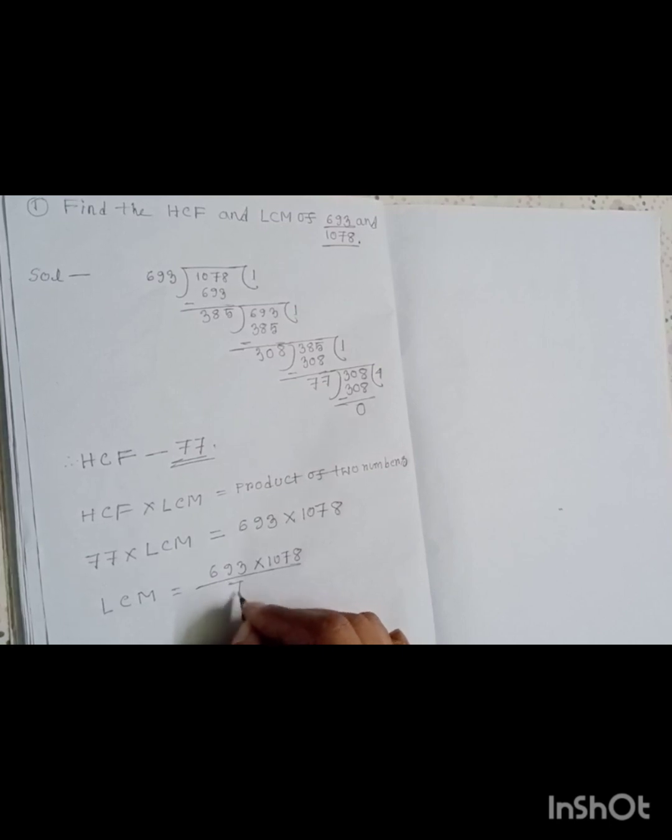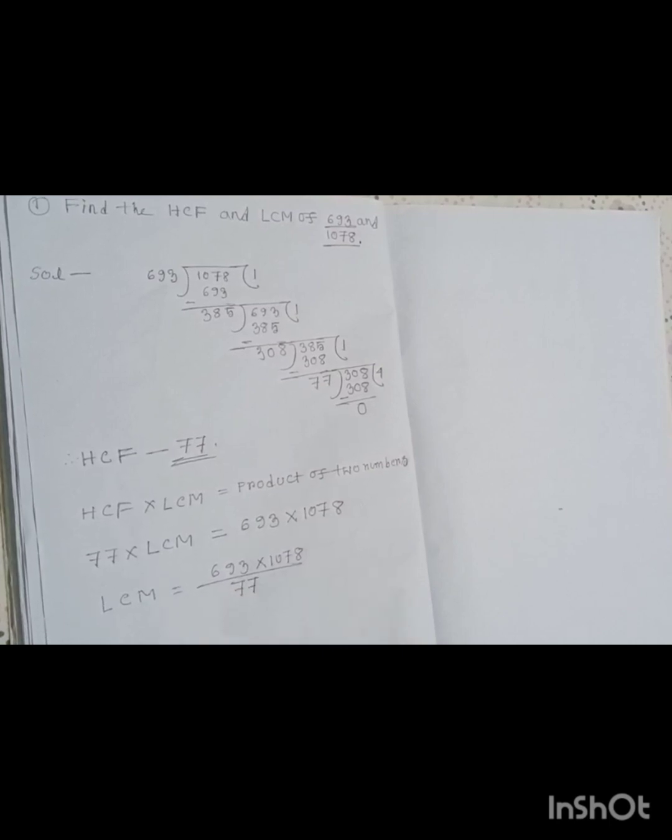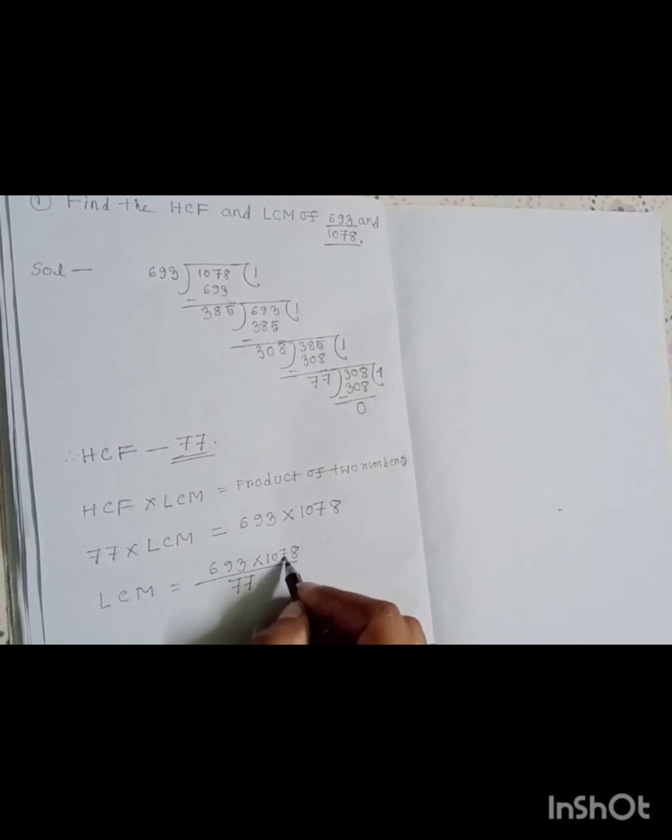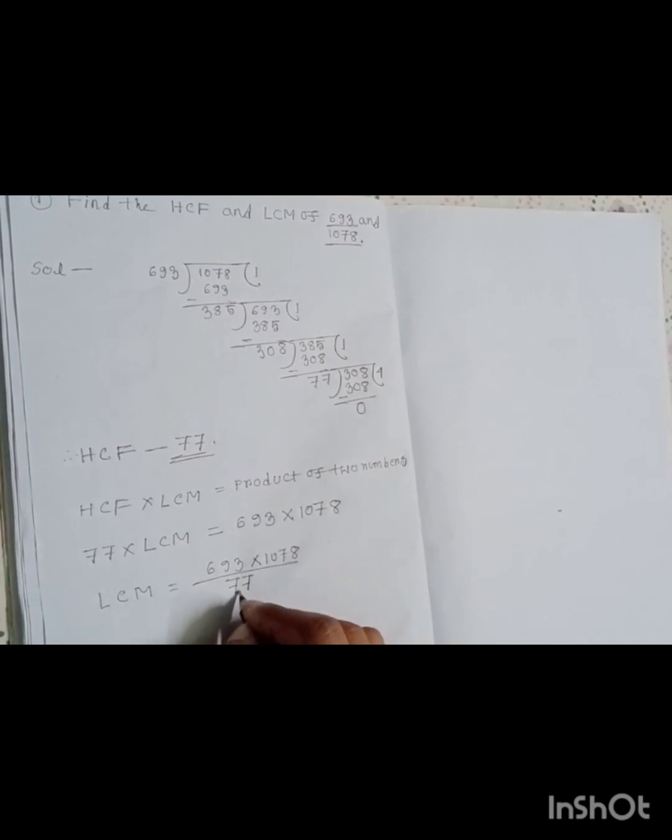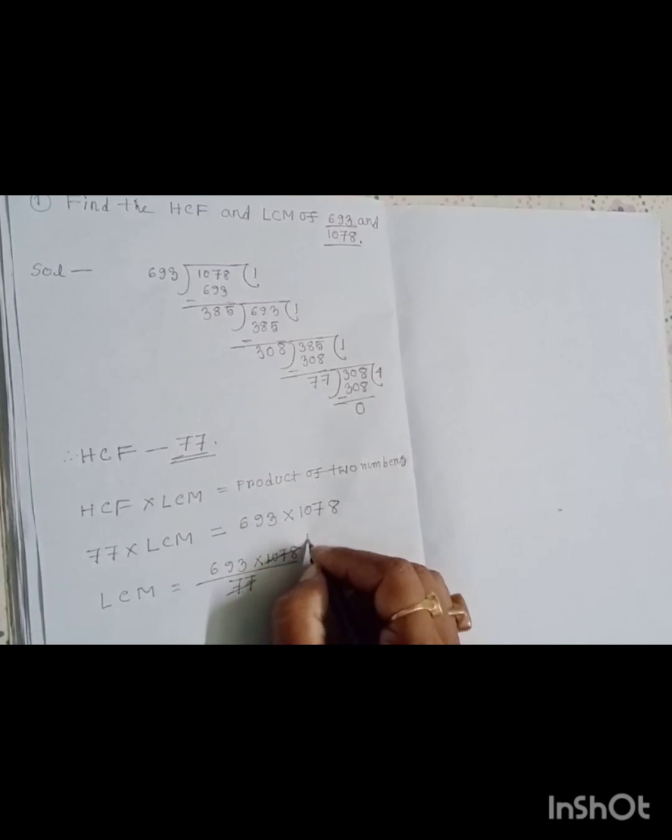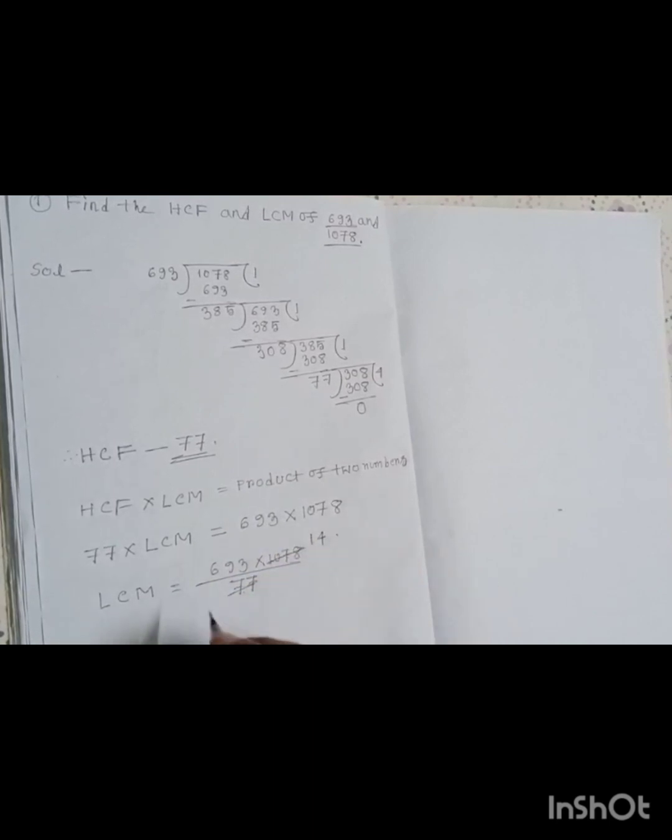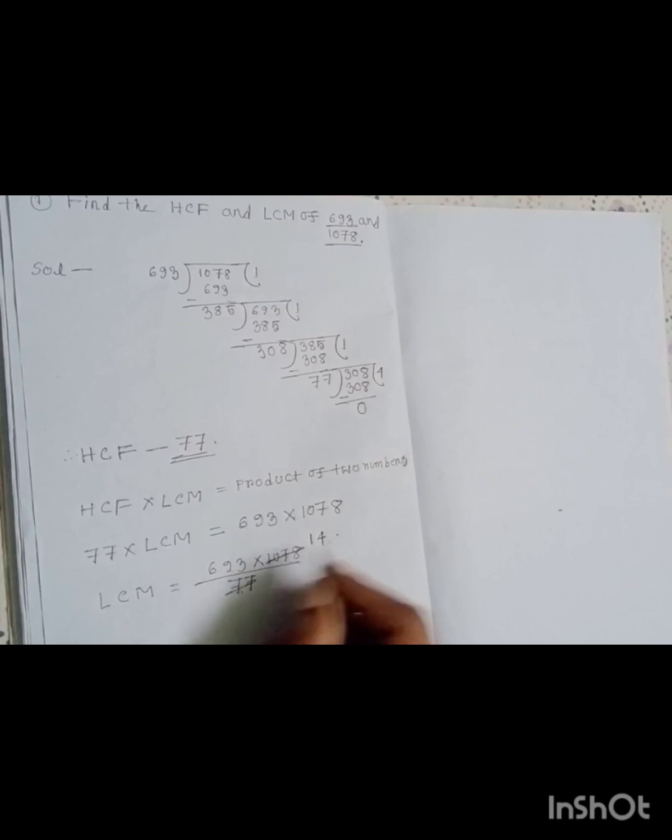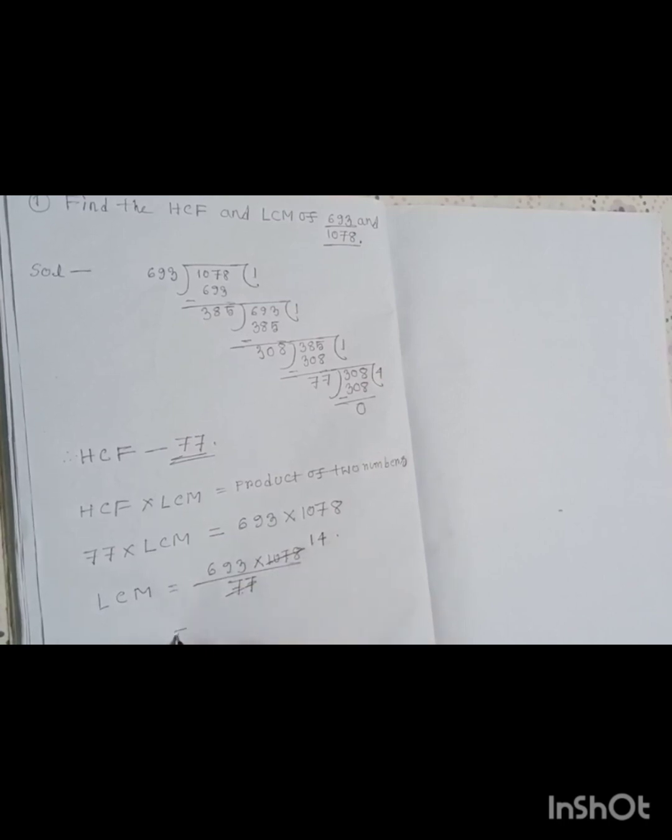693 × 1078 divided by 77. If we divide 1078 by 77, we get 14. So now we multiply 693 by 14.